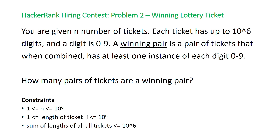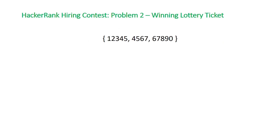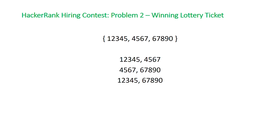Let's take a look at an example. We have three tickets: 1 2 3 4 5, 4 5 6 7, and 6 7 8 9 0. We have three pairs based on these three tickets, and we can see by just looking at them that only the last pair is a winning pair because it has every single digit within the two tickets.